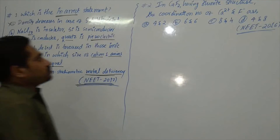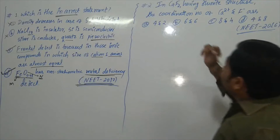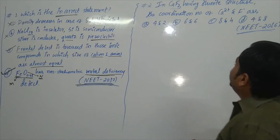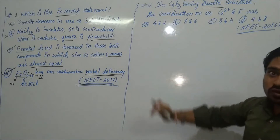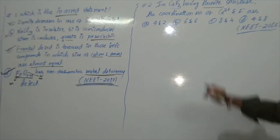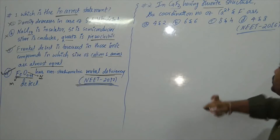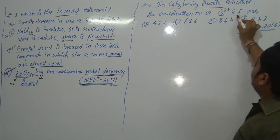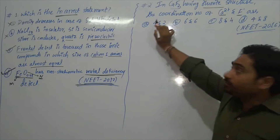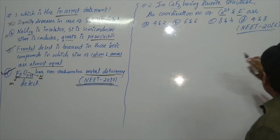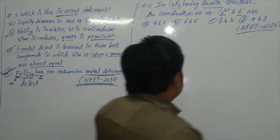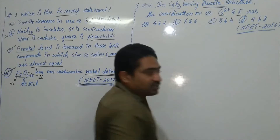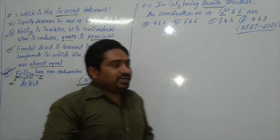Next problem: In calcium fluoride, the compound has a fluorite structure. We need to find the coordination numbers of calcium ions and fluoride ions. Before solving this, let us understand what the fluorite structure is.